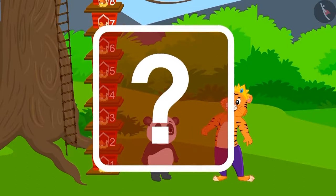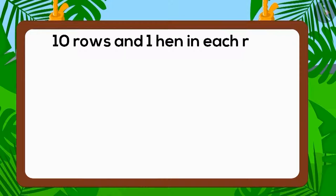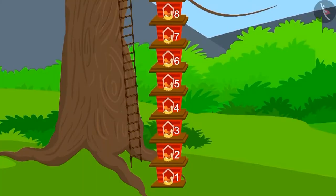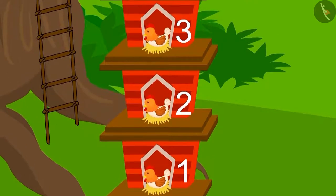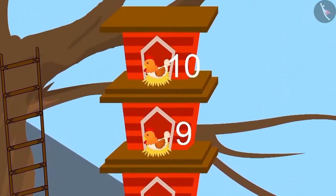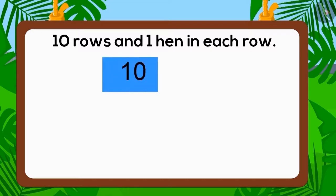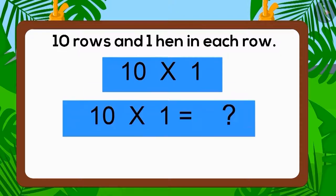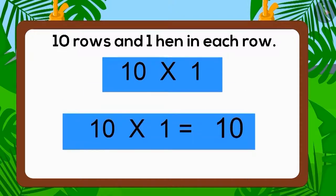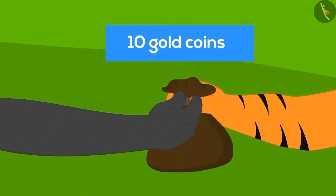In the house built by Golu there were ten rows and each row had one hen — so every row had an equal number of hens. The total number of hens in Golu's house was ten. In the form of multiplication: ten multiplied by one equals ten. Golu had built the house perfectly, and the king gave him ten gold coins as the prize.